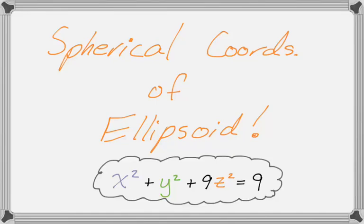In this video, we're going to write spherical coordinates or equations for an ellipsoid. Specifically, x² + y² + 9z² = 9.